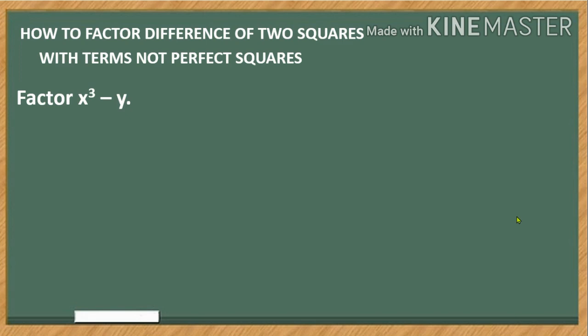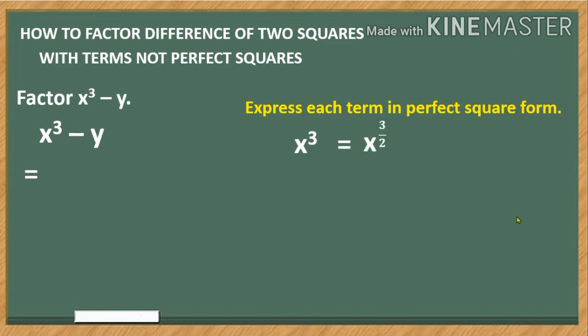We have factor x cubed minus y, so we have to express its term in perfect square form. In our first term x cubed, we have x raised to the power of 3 over 2. Are they equal? No, they are not. So in order for them to be equal, we have to raise this expression by 2, so in that way they are equal.